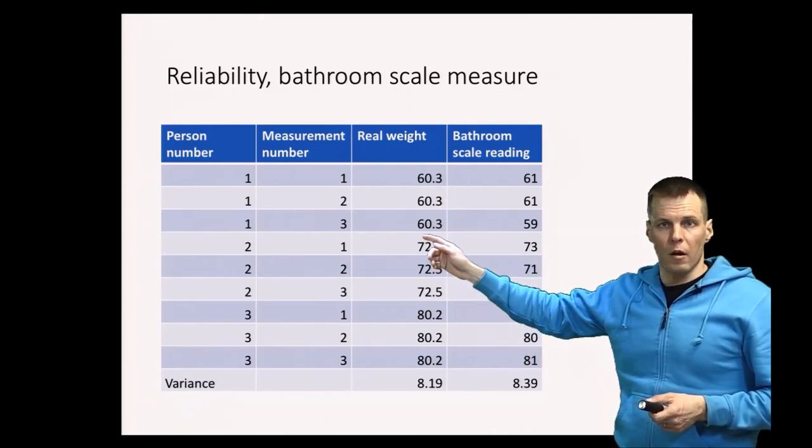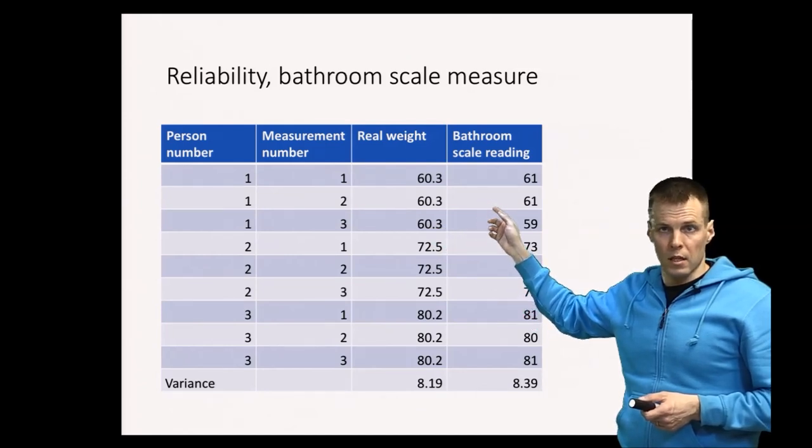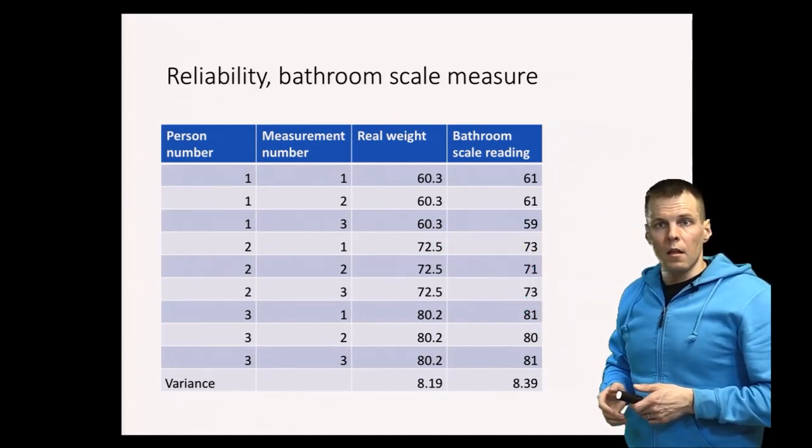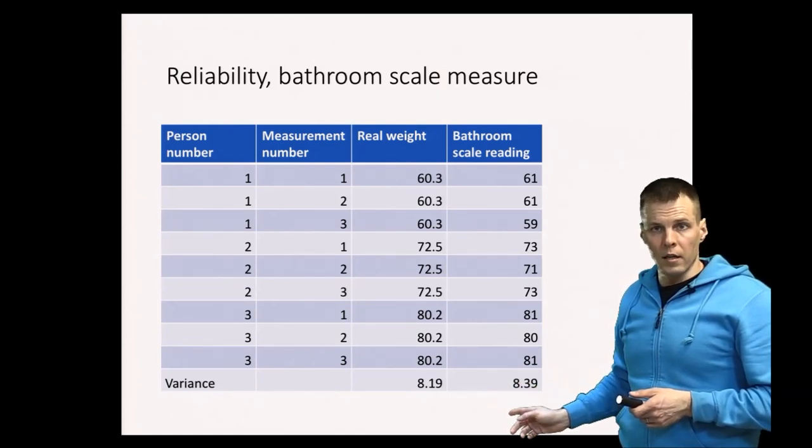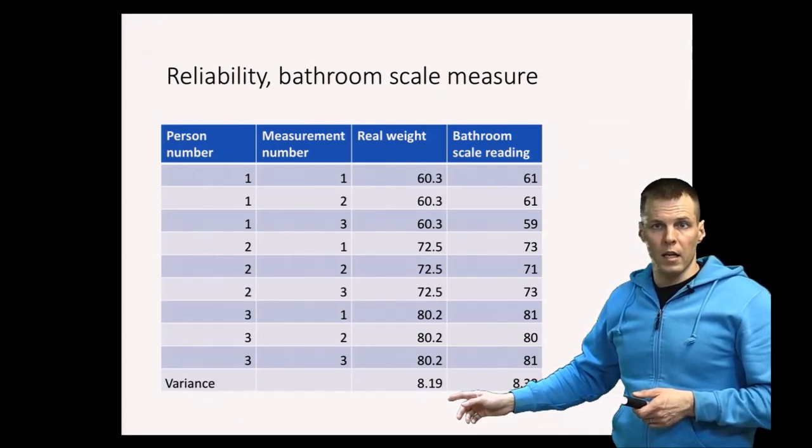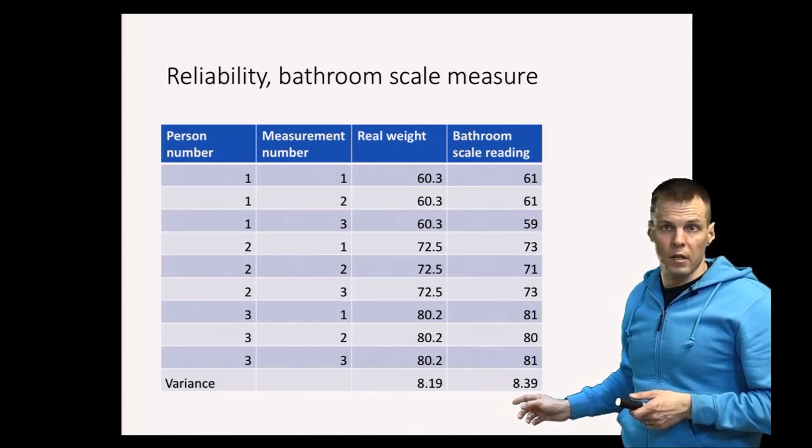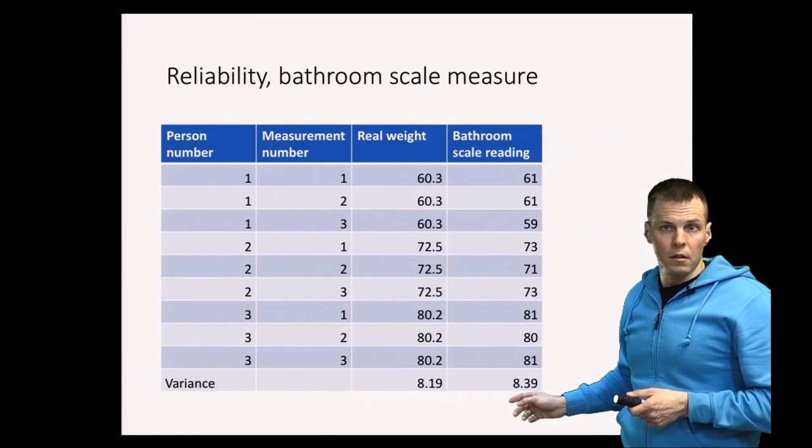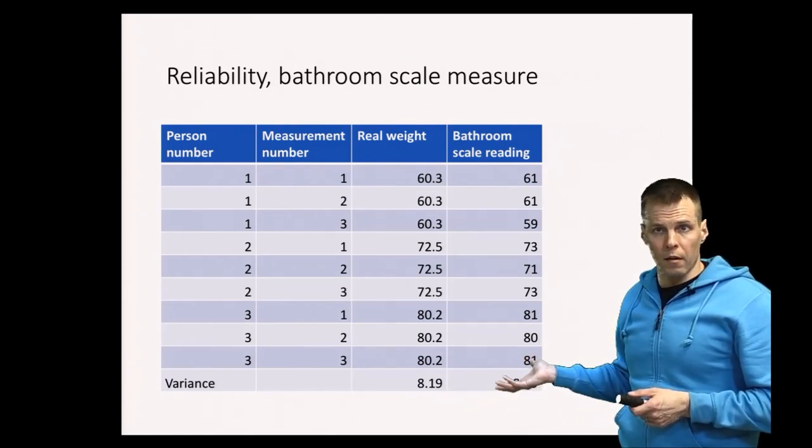So for this person who is a bit more than 60 kilos, we have our three measurements 61, 61, and 59. The reliability here is quite high, so the variation of real weight is 8.19 and the variance of measurement is 8.39, which is only slightly larger than the actual real weight.